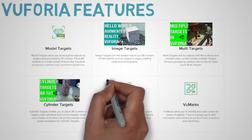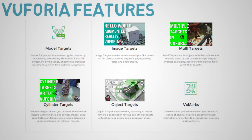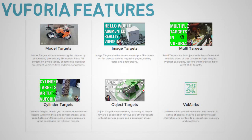Getting more advanced, object targets are created by scanning an object and are a good option for toys and other products with rich surface details and a consistent shape. In this course, I use a paper punch as an object target, but you can use any small object you like. Model targets is a new feature in Vuforia 7, still in beta development. Essentially, model targets allow you to recognize objects by shape using pre-existing 3D models, and you can place AR content on a wide variety of items like industrial equipment, vehicles, toys, and home appliances.